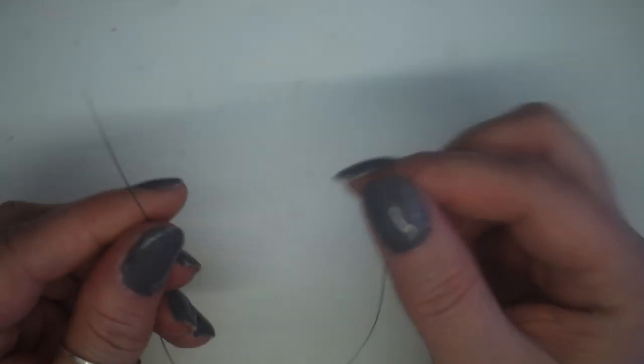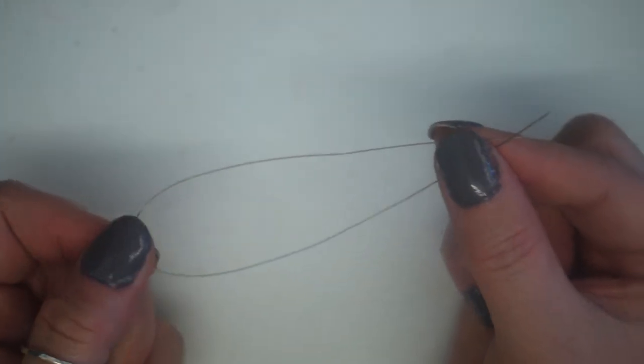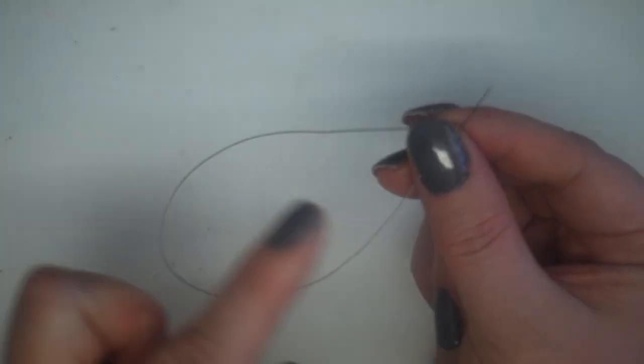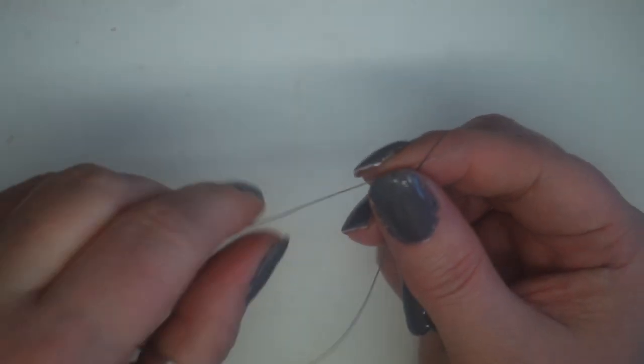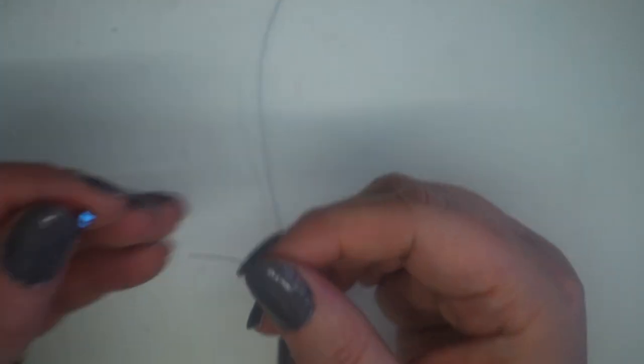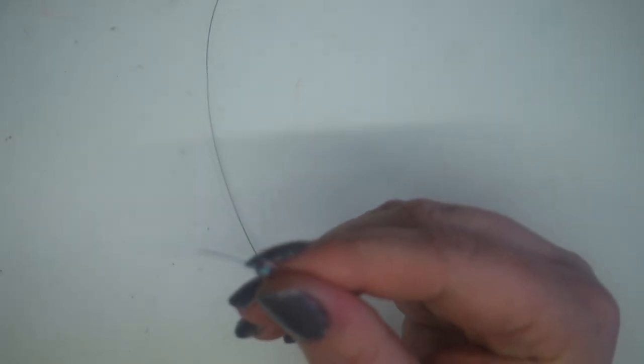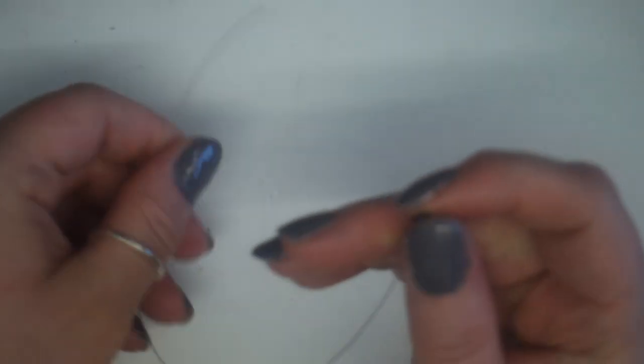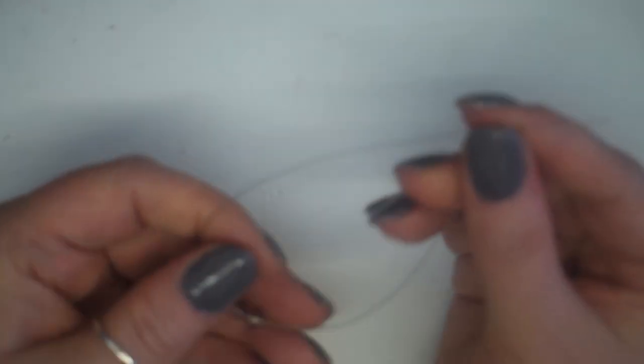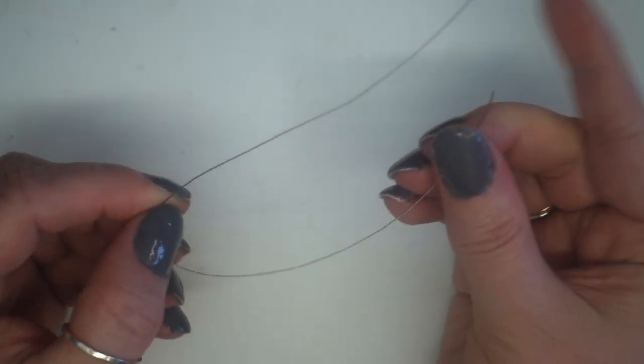Okay so I've gone ahead and cut about 10 inches of beading thread. You don't need a lot but it will be doubled over so obviously we need enough that's going to be able to go that's going to be folded in half. I'm going to go ahead and take three of the rhombus shaped Swarovskis, pop them onto the beading thread and drop them down to the middle bringing both the ends together again.